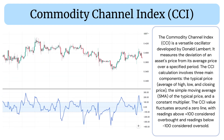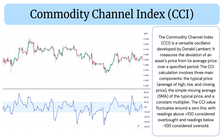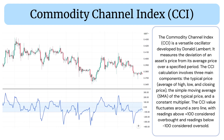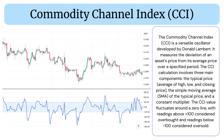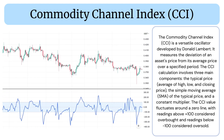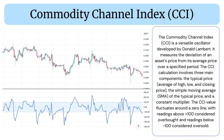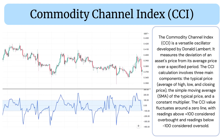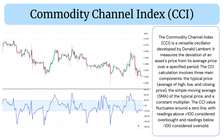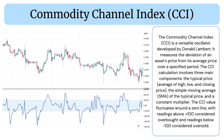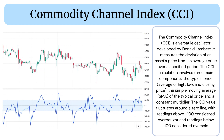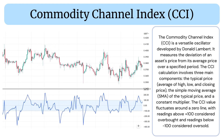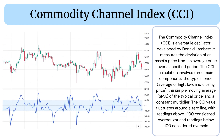The three components are: the typical price (average of high, low, and closing price), the simple moving average (SMA) of the typical price, and a constant multiplier. The CCI value fluctuates around a zero line, with readings above +100 considered overbought.